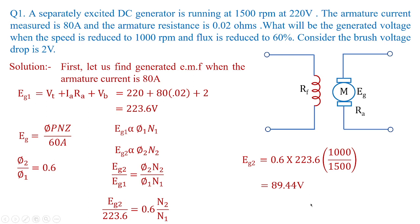The conclusion from this problem is that for a separately excited machine, if speed is reduced and flux is reduced, the generated voltage will also be reduced. Conversely, if speed or flux is increased, the generated voltage value will also increase. This conclusion is very important when understanding the characteristics of a DC generator, especially when it is separately excited.